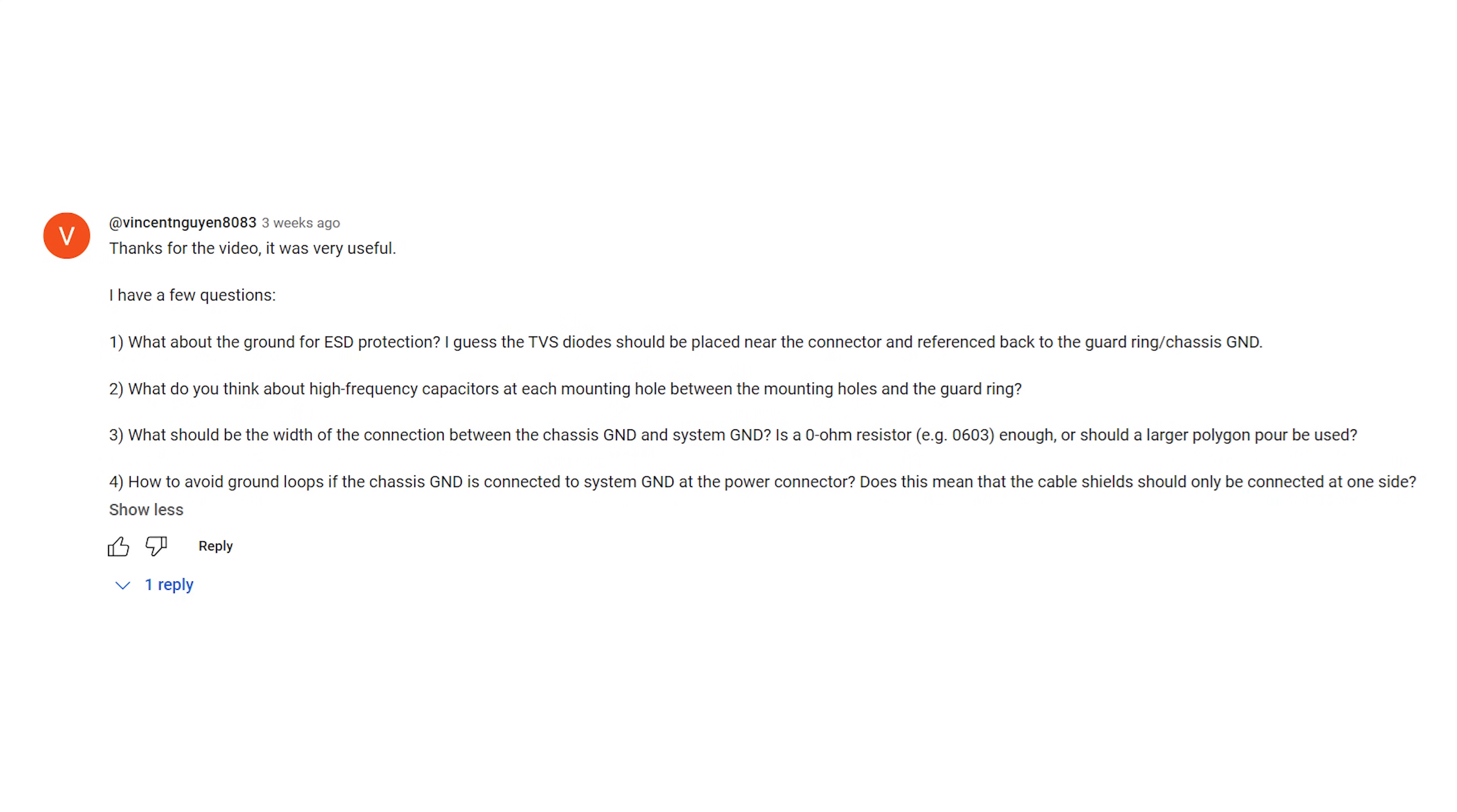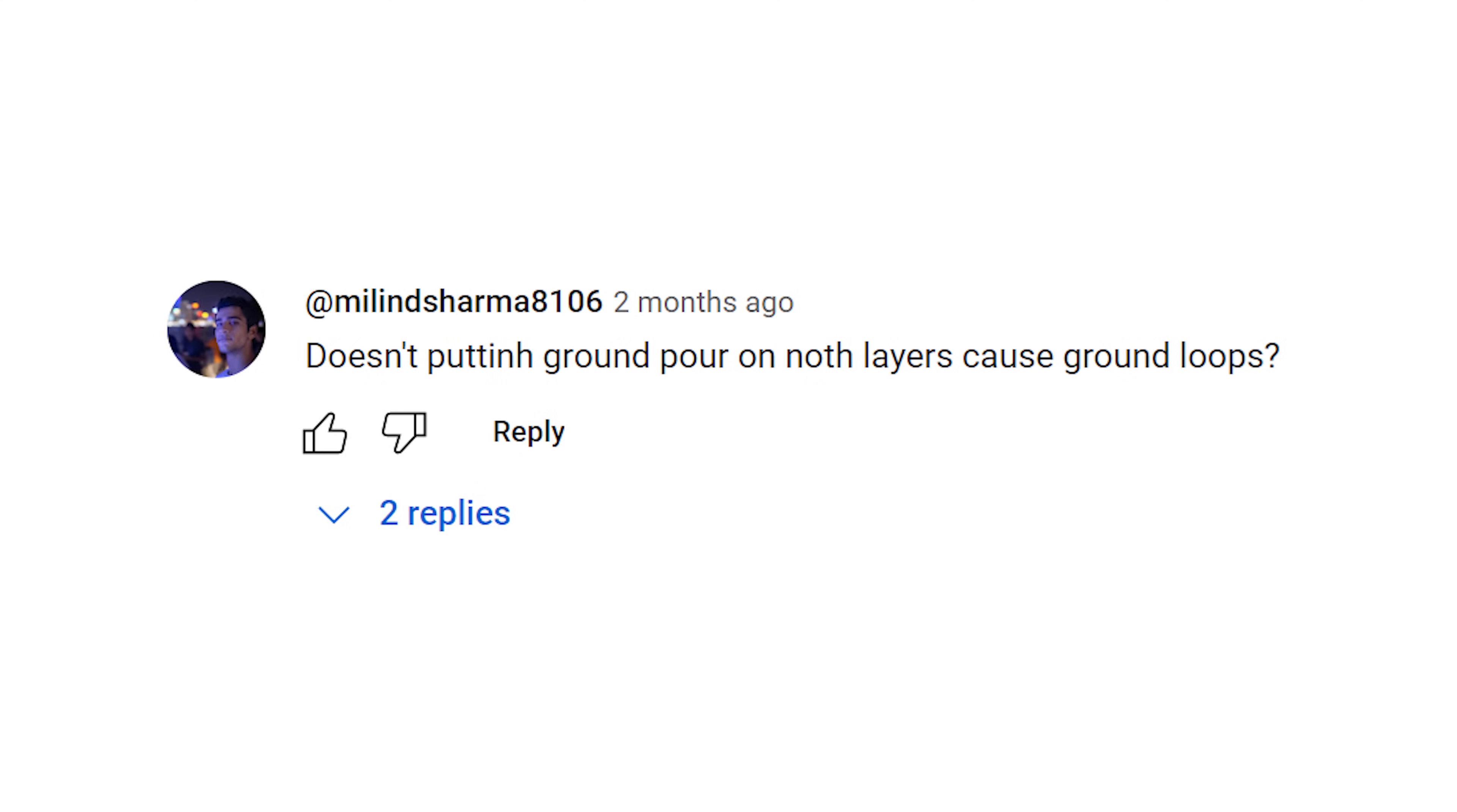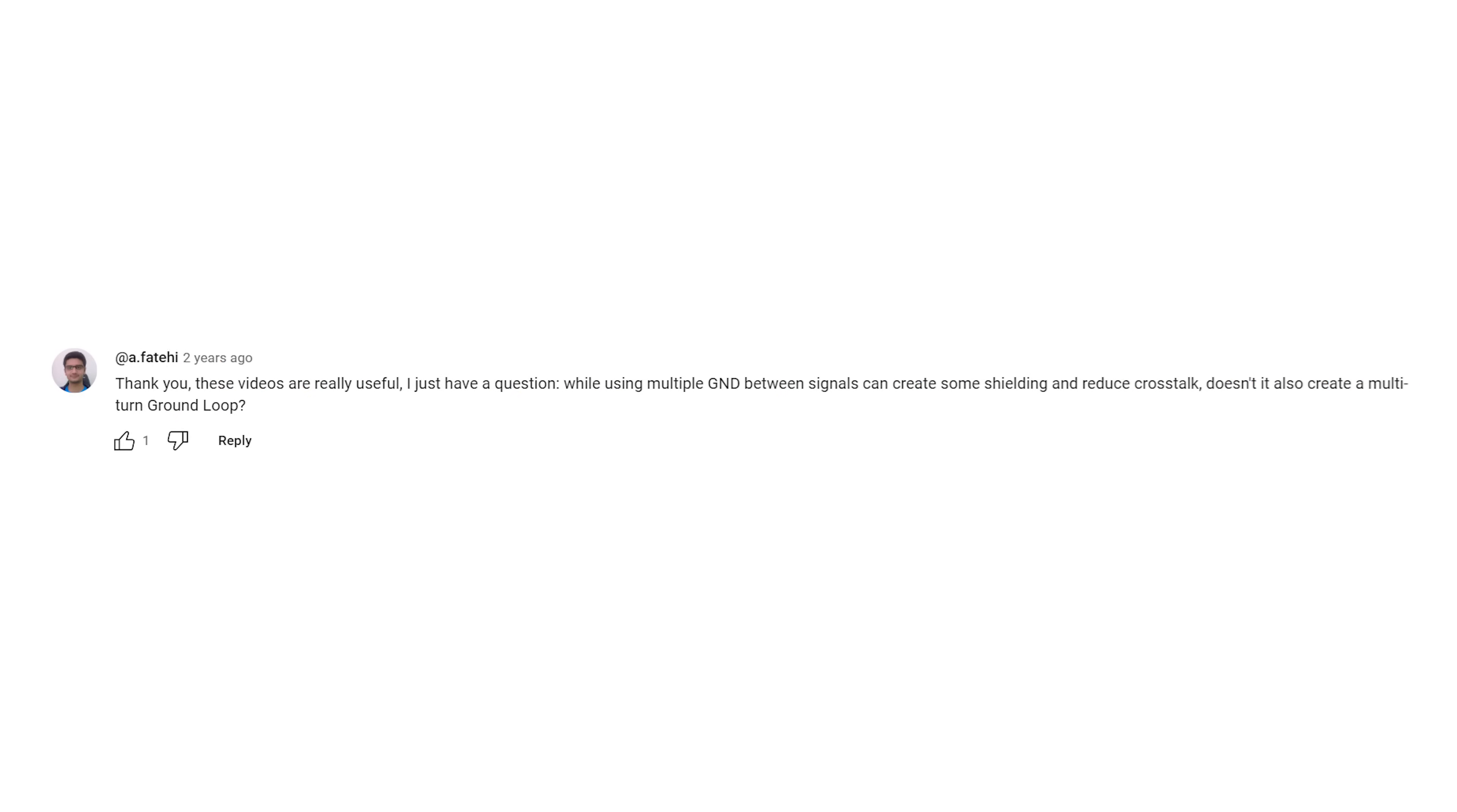Vincent Nguyen writes, thanks for the video, it is very useful. How to avoid ground loops if the chassis ground is connected to system ground at the power connector. Here we have another question, connecting ground pours together using vias at several places would cause ground loops, am I correct? Doesn't putting ground pour on both layers cause ground loops? I've always wondered how they design ground and chassis ground when there is no direct connection to earth. Do they normally just ground one mounting hole on PCBs to avoid ground loops? When using multiple ground between signals can create some shielding and reduce crosstalk, doesn't also create a multi-turn ground loop?